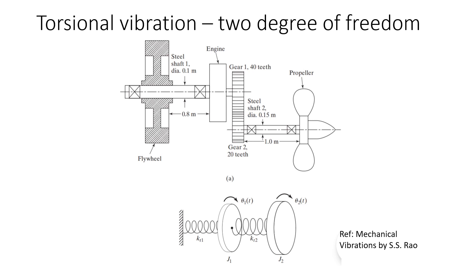The engine and the gears are very close to each other so we can consider it as one equivalent rotor, and the second rotor is of the propeller. So we have two rotors and two springs—the steel shaft one and steel shaft two. This arrangement of two degree freedom system is very similar to the spring mass system which we have seen before.